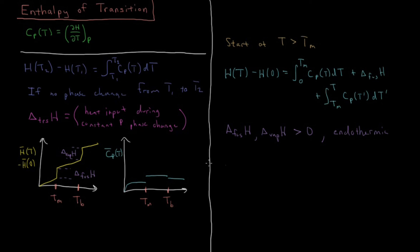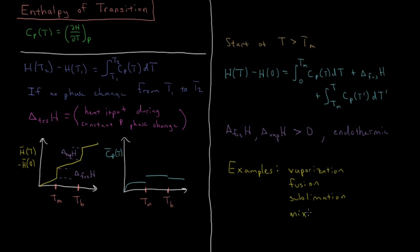To finish off, let's list some examples of the types of phase transitions you might come across for these different subscripts in our different enthalpies. We have vaporization or boiling, fusion which is melting, sublimation — going from a solid to a gas — and you could also have mixing or adsorption to a surface, various things like that. Or it might just be a special case and they use the general subscript 'trs' for transition. Those are the types of enthalpies of phase transitions you are likely to come across in your chemistry studies.